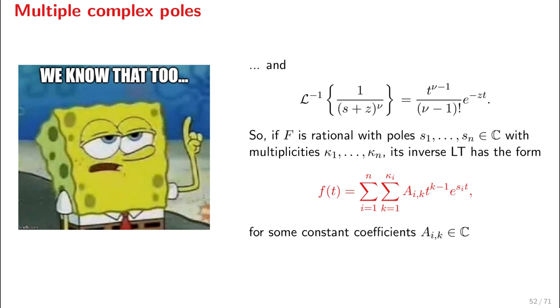So t to some power k - 1 times an exponential function, where the exponent can be a complex number. So this exponential is to be interpreted as a product of exponentials with trigonometric functions, as we saw previously. And it is a complex-valued function.